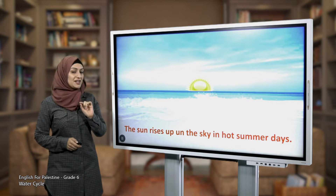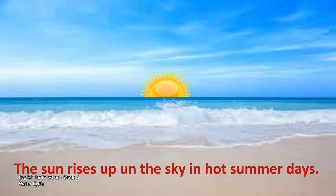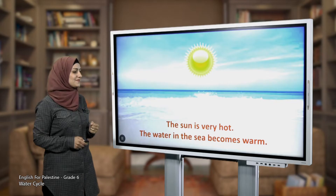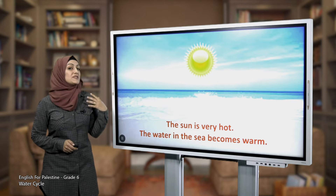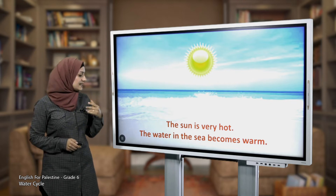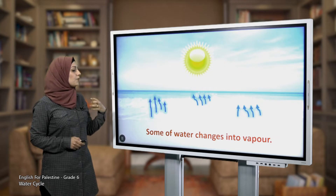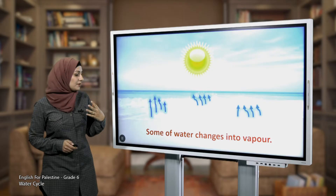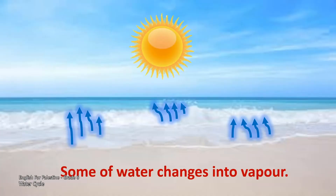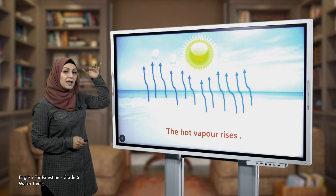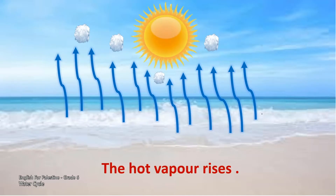The water cycle starts when the sun rises up in the sky on hot summer days. Because the sun is very hot, it can make the water in the sea warm. The water that becomes warm starts to change into vapor.